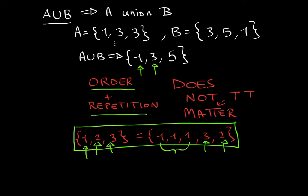In the last lecture, we talked about A union B and what this meant. Anytime you see A, then this U, then B, you read it as A union B. Let's say we had a set A with elements 1 and 3, and a set B with elements 3, 5, and 1. If we were to unionize them, then A union B is {1, 3, 5}.